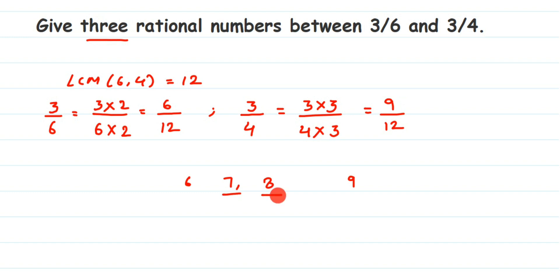What we are going to do is find equivalent rational numbers again for 6/12 and 9/12 to create a bigger gap. Since the question asks for 3 rational numbers, we multiply by any number greater than 3. Don't take 3 itself, because multiplying by 3 will only give 2 rational numbers in between. You can pick any number greater than 3 — like 10, 12, or 13.